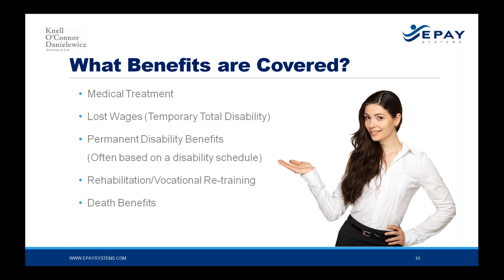Moving on to what benefits are covered. These vary somewhat from state to state, but most states offer payment for medical treatment related to the work injury, including emergency room treatment, office visits, diagnostic care, surgical costs, post-operative care, and physical therapy. Almost all states have a benefit for lost wages, commonly referred to as temporary total disability, or TTD — essentially wage replacement while the injured worker is recuperating. Another benefit is permanent partial disability, generally what the injured worker receives as their settlement or award, often based on the individual state's disability schedule.